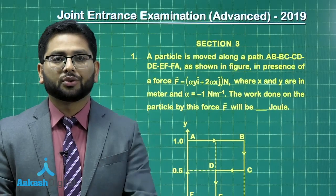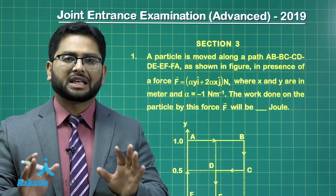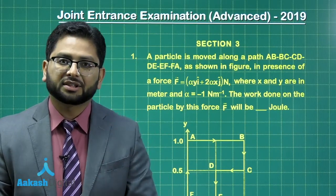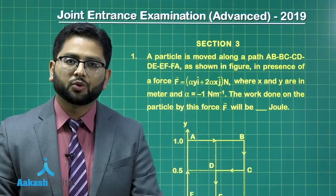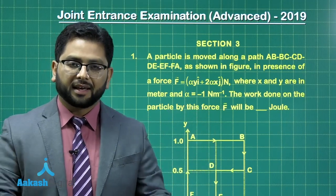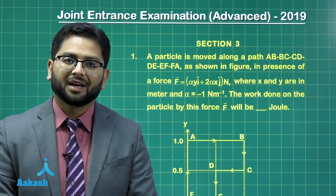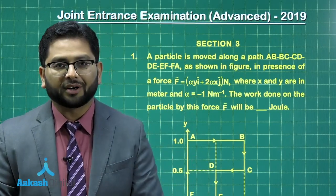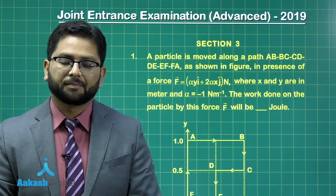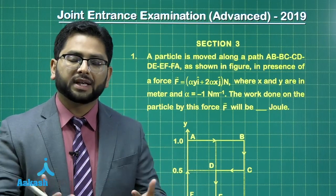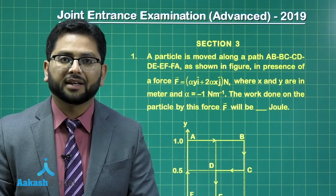Now let's proceed to Section 3. Let me give you a brief about Section 3 and the type of question. Unlike previous Sections 1 and 2 where we had options given, here there is no option available and we need to solve. The answer to be recorded is up to two digits after the decimal. If on calculation there are more than two digits, that would be suitably truncated.